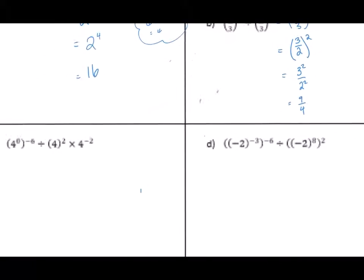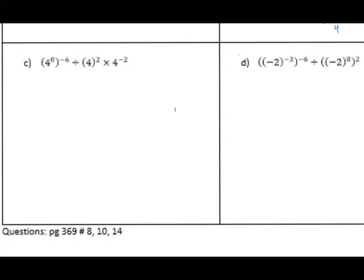For part C, we apply all the rules together. Applying the power of a power rule to 4 to the 0, we get 4 to the 0 divided by 4 squared, times 4 to the negative 2. Applying the division rule from left to right: 4 to the 0 divided by 4 to the 2 gives 4 to the negative 2. Then applying the multiplication rule: 4 to the negative 2 times 4 to the negative 2 gives 4 to the negative 4, which equals 1 over 4 to the 4, which is 1 over 256.